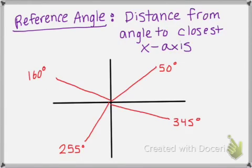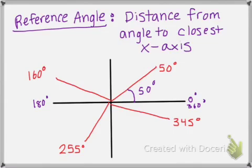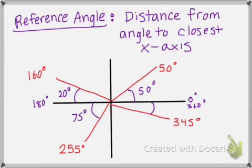The most important thing when we're finding exact values of different angles is what's called the reference angle. The reference angle is the distance from your angle to the closest x-axis. So for 50 degrees, that distance is 50 degrees. For 160, the reference angle is 20 degrees. For 255, which is in quadrant 3, the distance between 180 and 255 is 75 degrees. And for 345 degrees, the distance between 345 and 360 is 15 degrees. Your reference angle is always going to be positive.